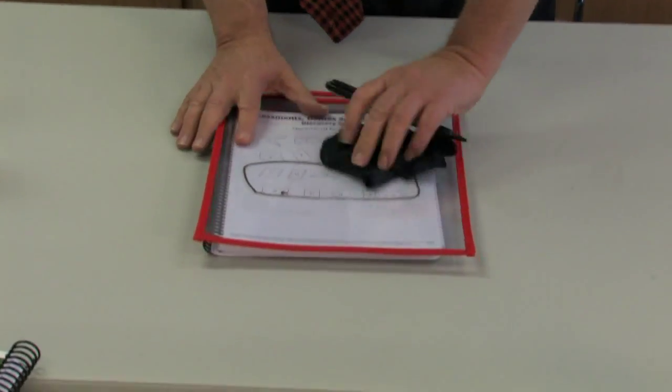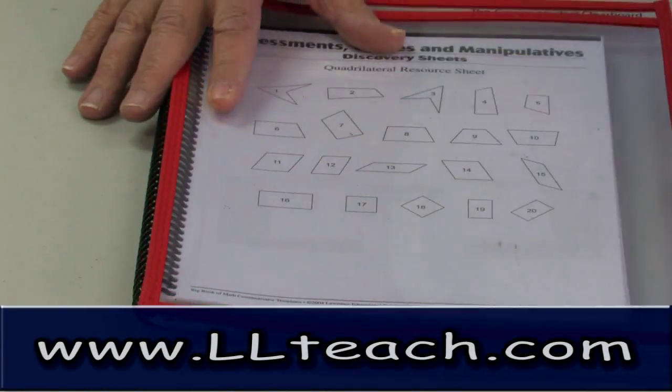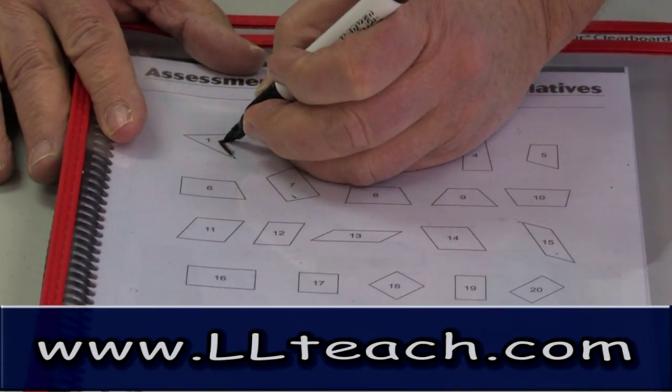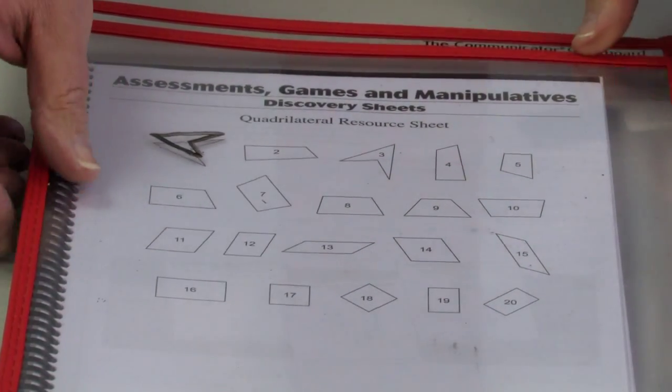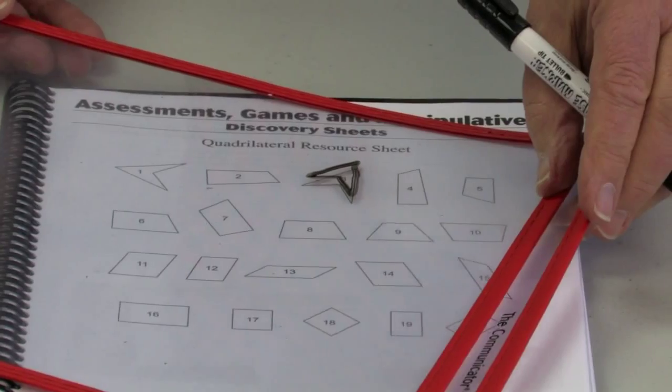There are so many other questions that you can ask. This is another quick question. Suppose we said I want to see congruency. Are there any figures that are congruent to number one? So what we can do is turn the communicator and we can see whether one and three are congruent, and they are.